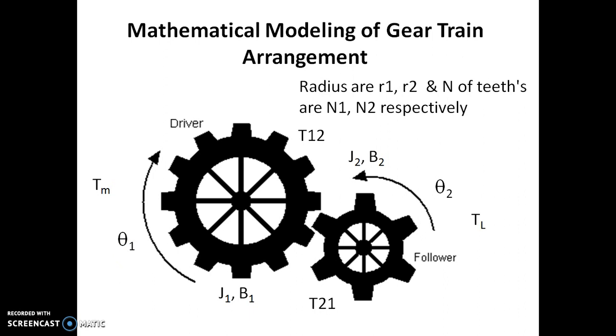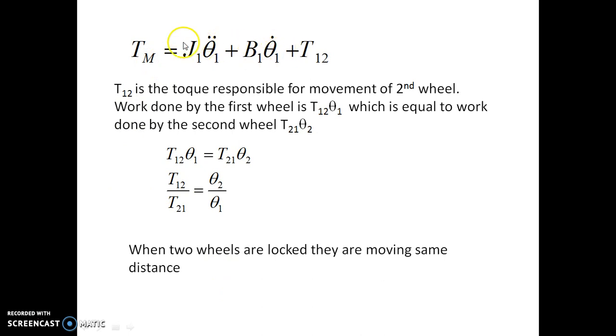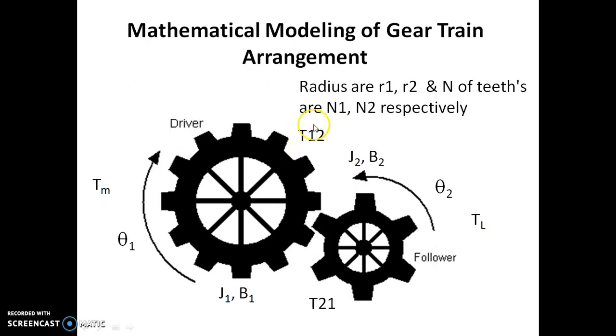We all know change of state is always opposed, so the displacement theta1 of the wheel will be opposed by the inertia J1 and the frictional coefficient B1. Therefore, a torque equation we can write is: Tm is opposed by the inertia due to displacement of theta1, and the viscous friction present is B1*theta1_dot. The amount of torque left is T12, which we can take as an intermediate torque that is actually applied on the follower wheel.